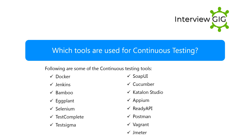Which tools are used for continuous testing? Following are some of the continuous testing tools: Docker, Jenkins, Bamboo, Eggplant, Selenium, TestComplete, TestSigma, SoapUI, Cucumber, Katalon Studio, Appium, ReadyAPI, Postman, Vagrant, and JMeter.